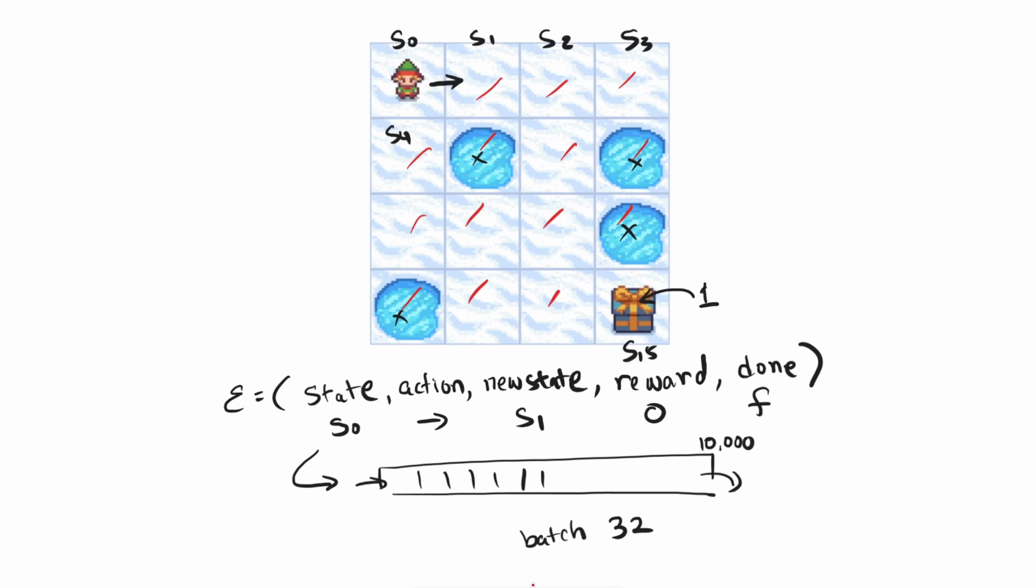It's only when we get to the goal by doing this transition that we start getting the Q values in state 14. Then this experience becomes useful. But you can see that there is a higher chance of selecting the useless experiences compared to the useful ones. And that is the problem that Prioritized Experience Replay is trying to solve.